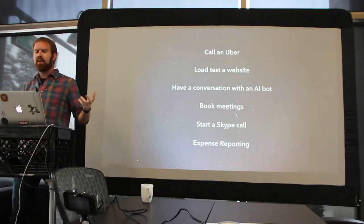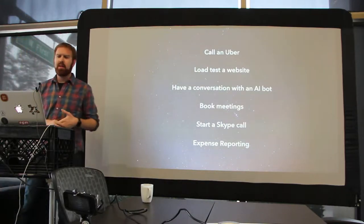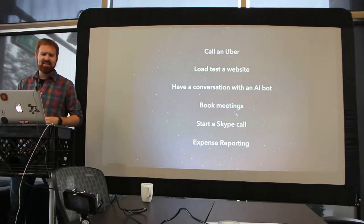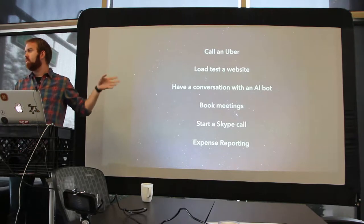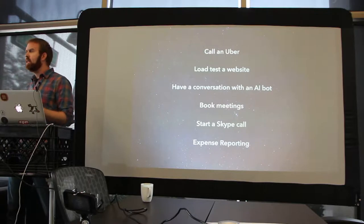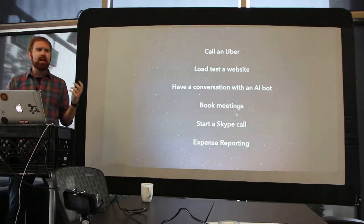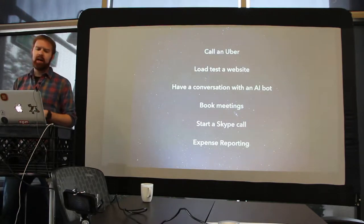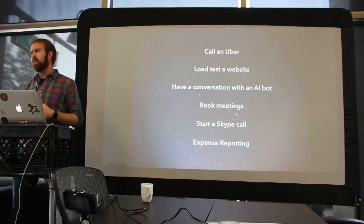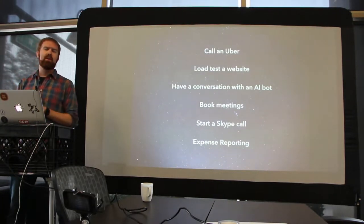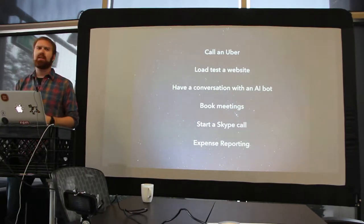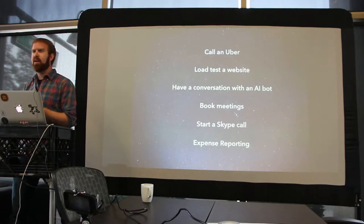Some of the things we can think of doing using APIs today: call an Uber, load test a website, have a conversation with an AI bot like the infamous Microsoft one we all saw this week, book meetings, start Skype calls, do expense reporting. All of these are things you can actually find in the Slack app store today. You can find out the wait time of an Uber and just tell it to order you one — all in a conversational interface, like slash Uber call car.